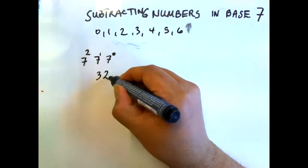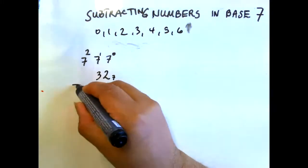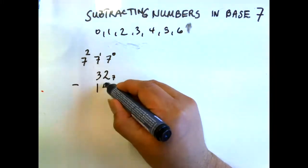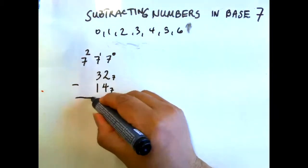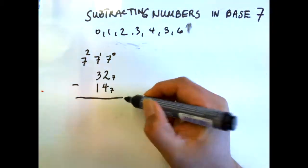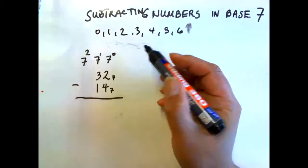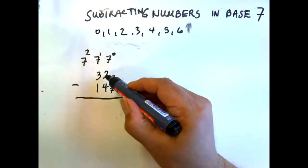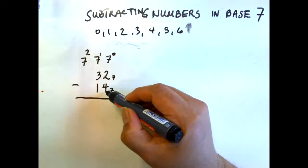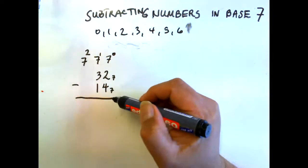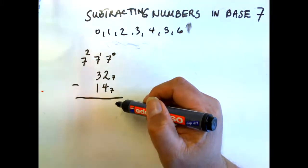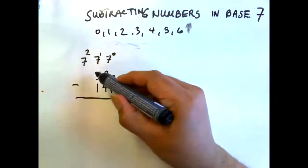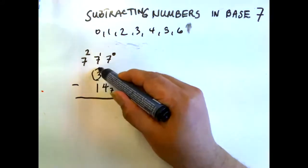So we have 32 base 7 minus 14 base 7. I'll go directly to the challenging bit: 2 less 4 — we cannot do it. We have to borrow from the next number.